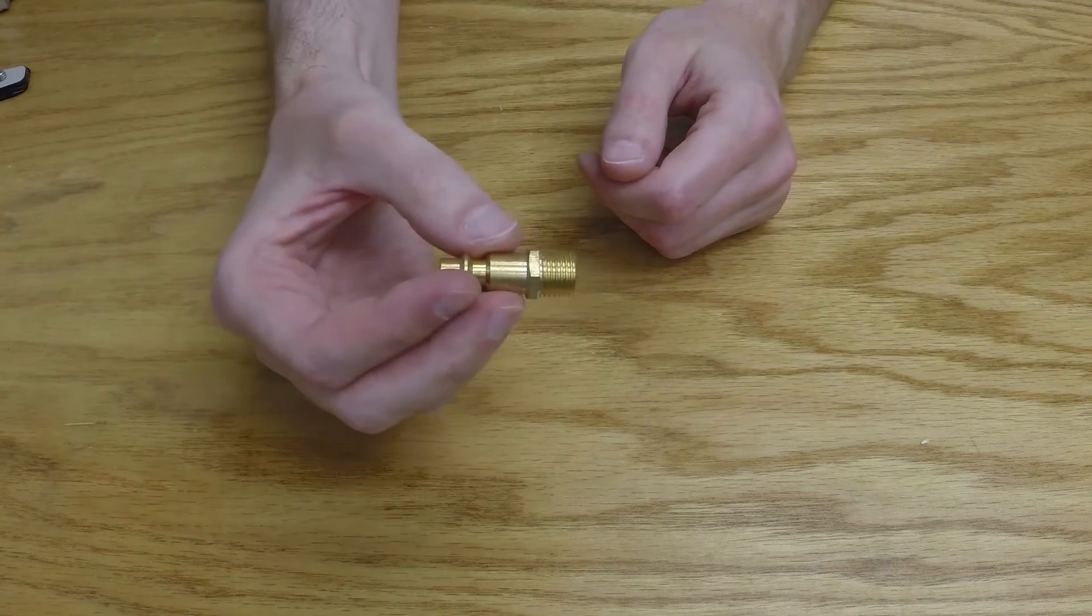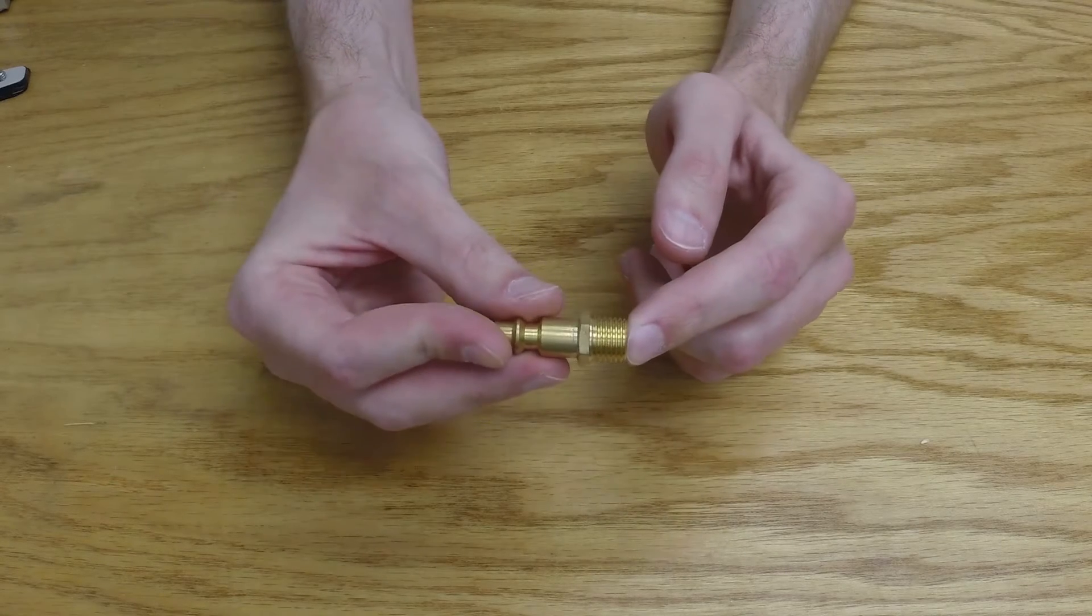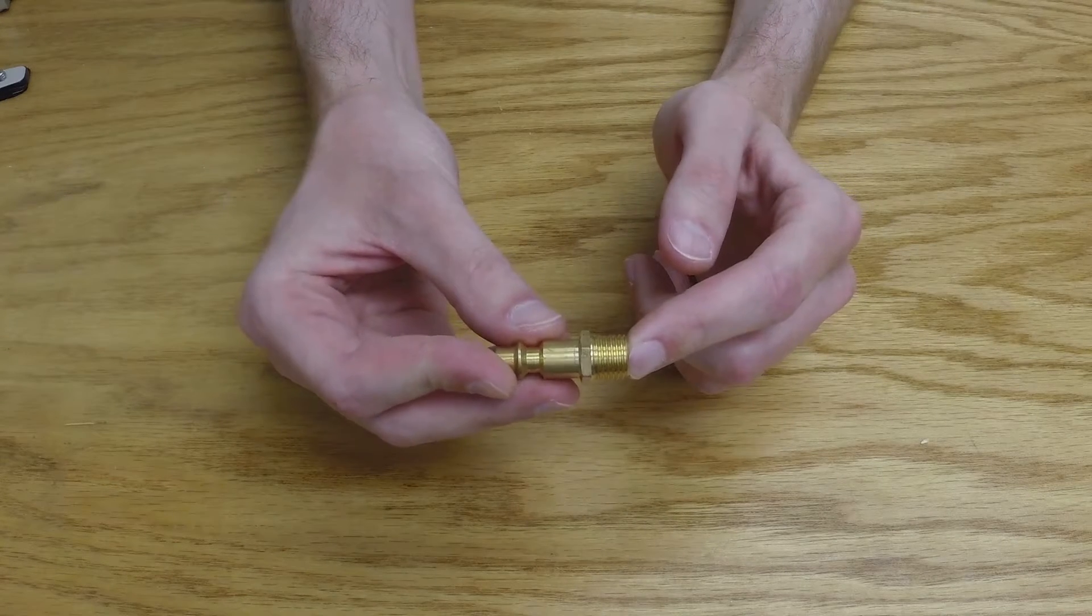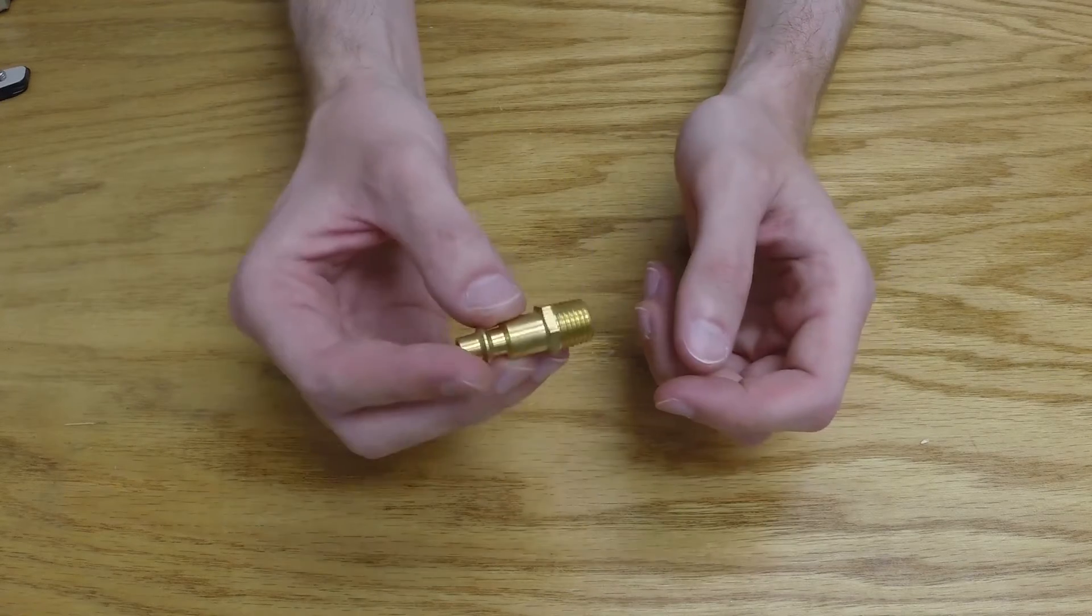The first kind of seal we'll look at uses tapered threads. This is an NPT fitting. These are commonly seen in air compressors, air compressor lines, air compressor fittings, though they're also used for water sometimes.